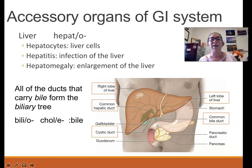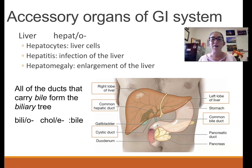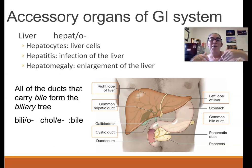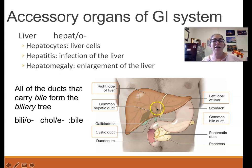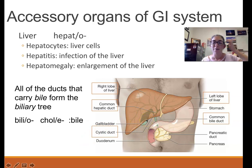Those are all the organs food physically passes through. There are also accessory organs that play an important role in digestion but don't have food pass through them. The first is the liver, whose important role in the GI system is producing bile. The biliary vessels — the biliary tree — make bile, which drains into the gallbladder. The combining form for liver is hepato.